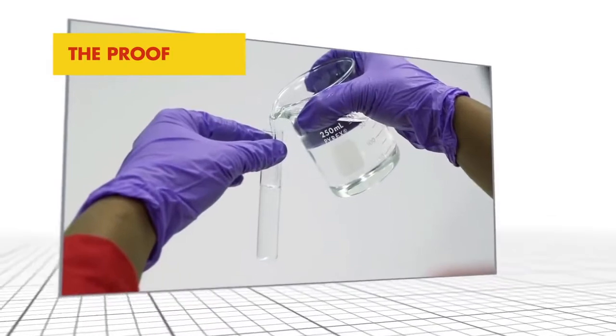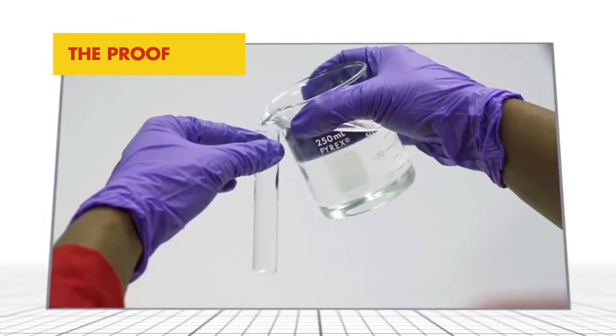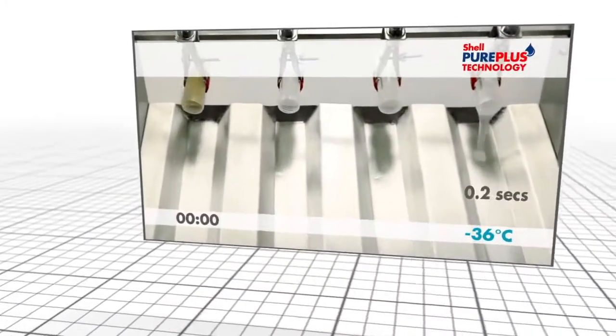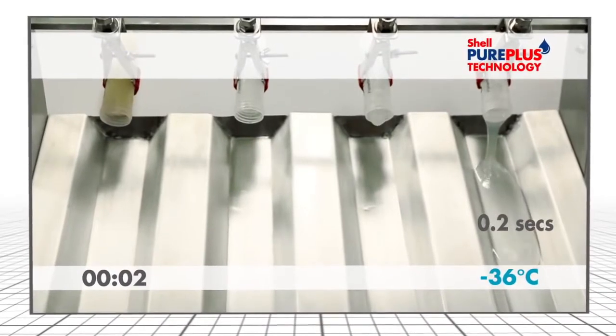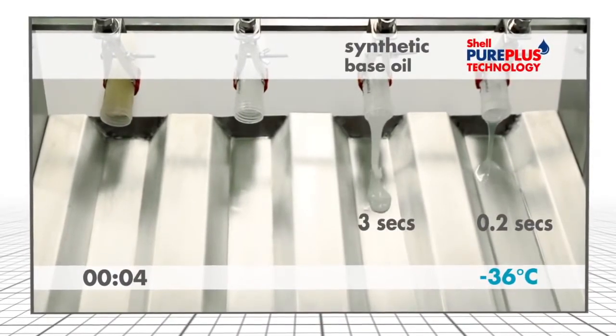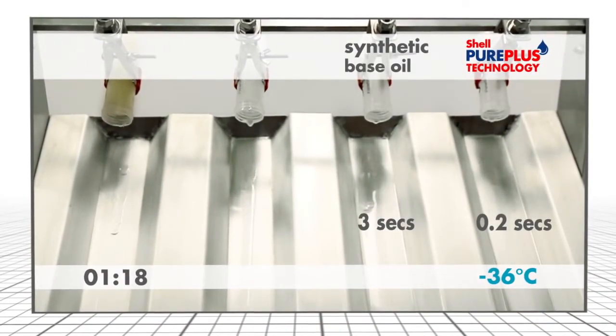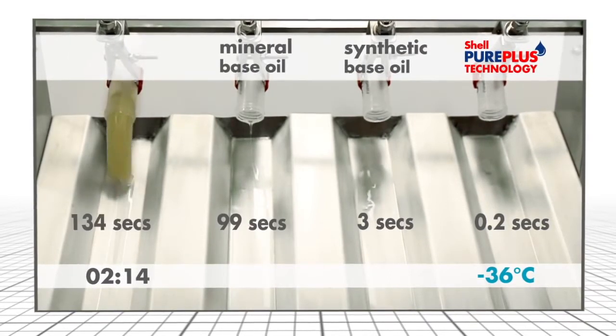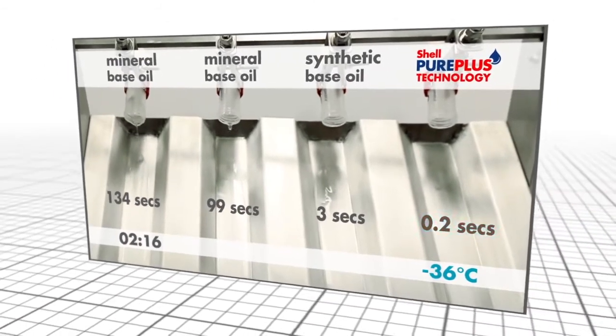Base oils created with Shell Pure Plus technology have key performance advantages over those derived from crude oil. These base oils have been cooled to minus 36 degrees centigrade to assess performance at extreme low temperatures. The Pure Plus technology base oil clearly demonstrates faster oil flow.